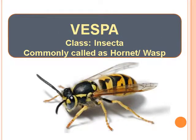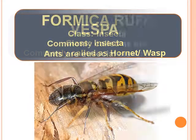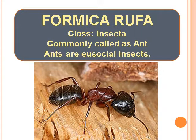Vespa — Class Insecta, commonly called as Hornet or Wasp. Formica Rufa — Class Insecta, commonly called as Ant. Ants are eusocial insects.